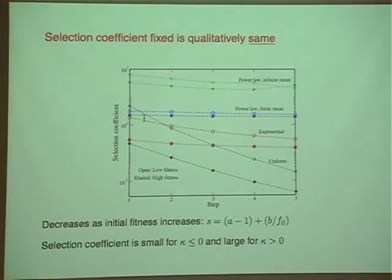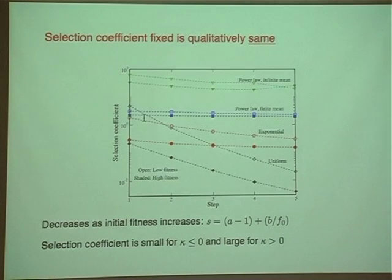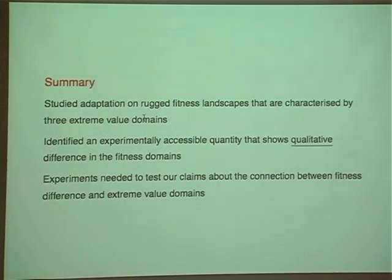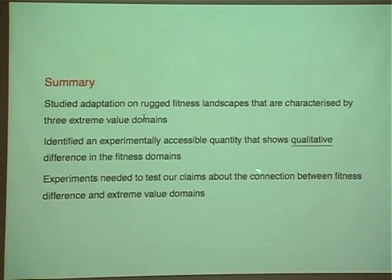To summarize: we studied adaptation on rugged fitness landscapes characterized by the three extreme value domains. DBFEs are not just exponential — there are two other types, and this is important. We believe we have identified an experimentally accessible quantity — the pattern of fitness gains across adaptive steps — that shows qualitative differences across the three fitness distribution classes. Therefore it should be possible to measure this quantity and learn about the underlying DBFE, but we certainly need more experiments to make the connection solid.